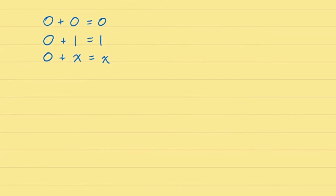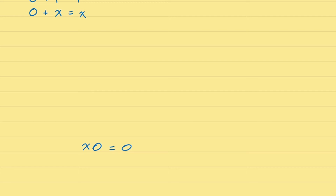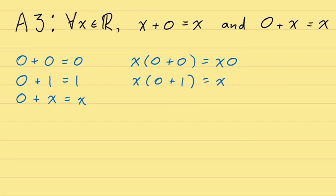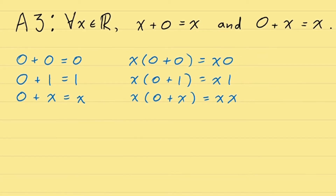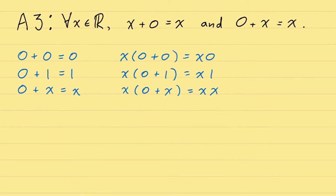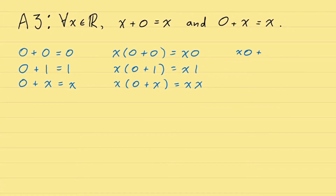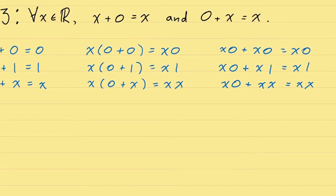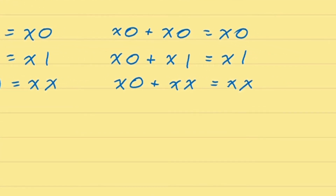The trouble is that Axiom A3 is about addition, whereas we're trying to prove something about multiplication — specifically, what happens when we multiply x by 0. Since we have these equations about 0, if we want to introduce multiplication by x, we can multiply x on both sides of each equation. After doing that and applying the distributive law, we get: x×0 + x×0 = x×0, and x×0 + x×1 = x×1, and x×0 + x×x = x×x. Where we're trying to get is the statement that x×0 = 0.